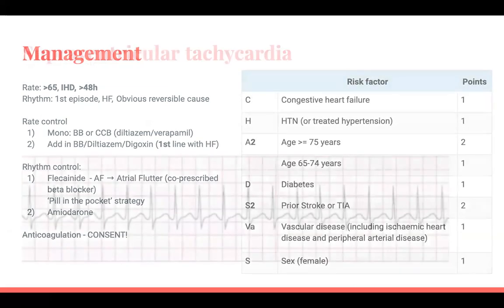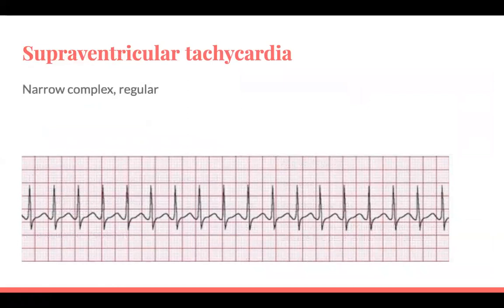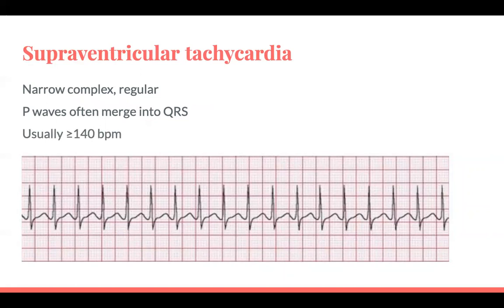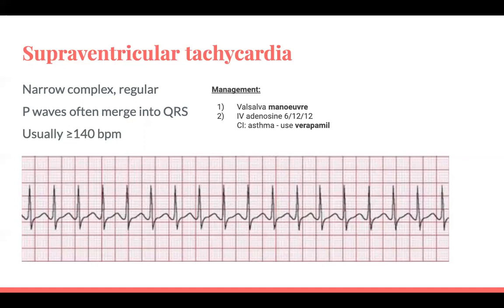The most common tachycardia after AF is SVT — narrow complex, regular. P-waves are present but often merge into the QRS complexes, making them hard to identify. Usually the heart rate is above 140. Risk factors include previous SVT and structural cardiac anomalies. Management: adenosine 6mg initially; if that doesn't work, try 12mg, then another 12mg. If the patient has asthma, adenosine is contraindicated — use verapamil instead. If adenosine fails, also try verapamil. If none of that works, cardiovert.